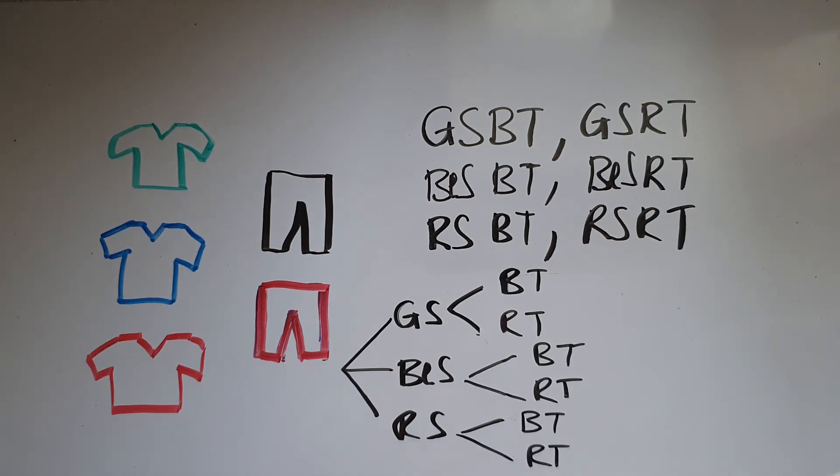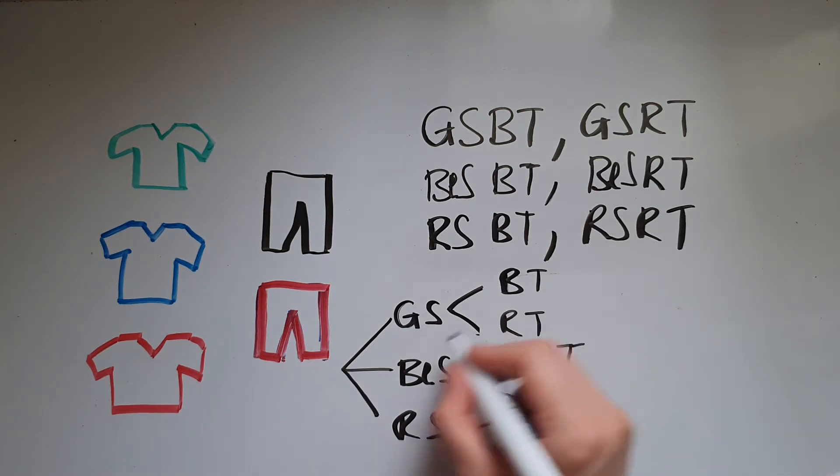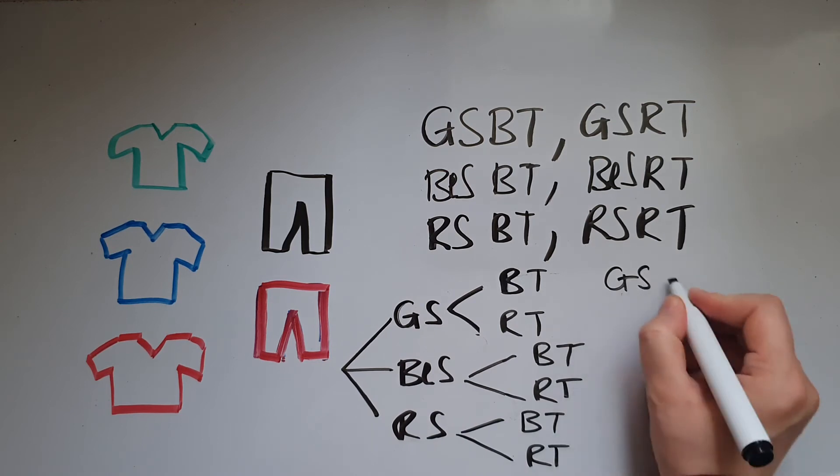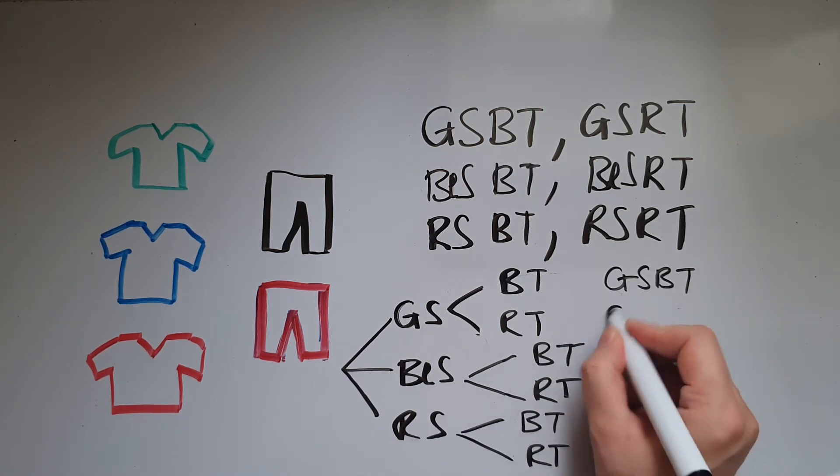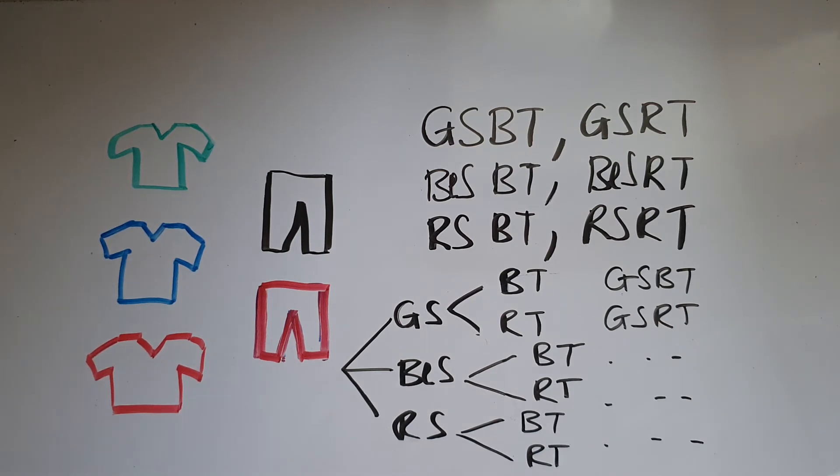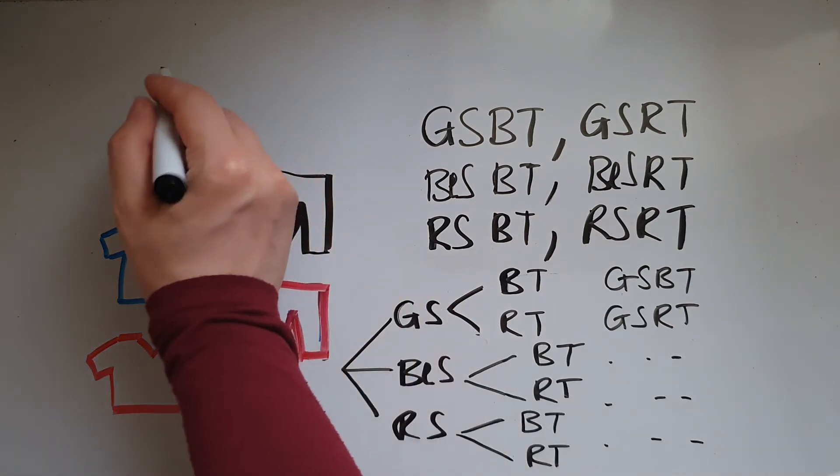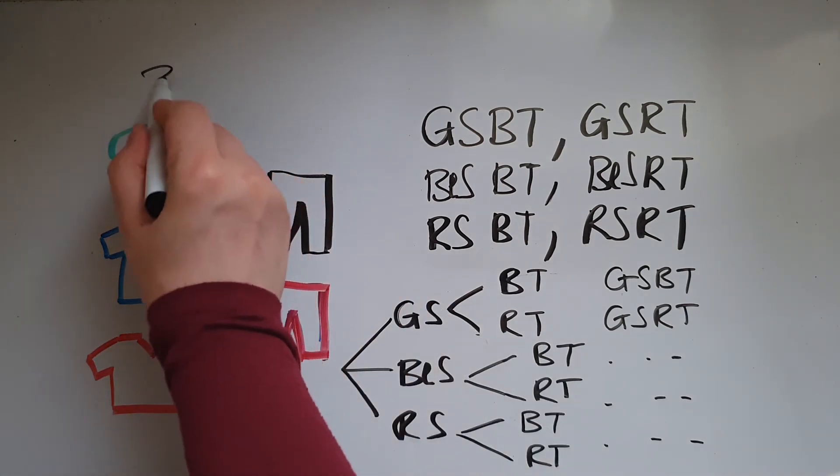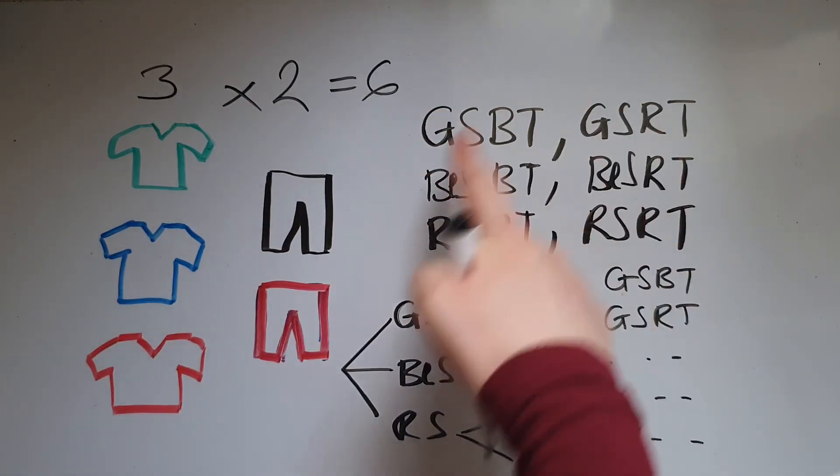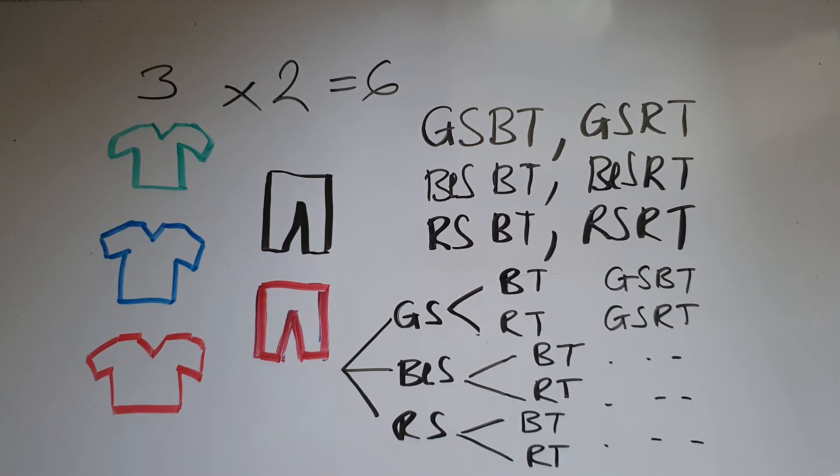So again, as a final thing, I could have green shirt with black trousers, green shirt with red trousers, and so on. So when it comes to the total number of possible outcomes, all you have to do is multiply them. There are three possibilities for the shirts because there are three colors, and there are two for the trousers. So three times two gives us six, and you could see that there are six possibilities, six combinations.